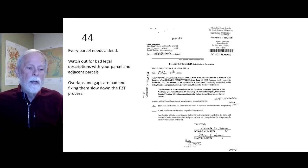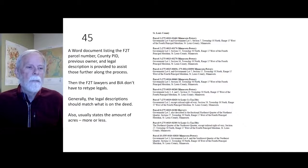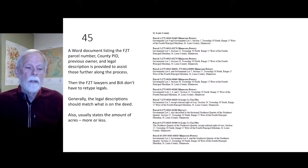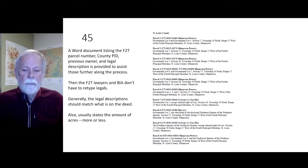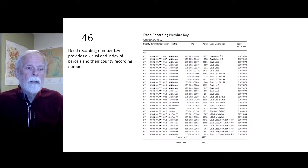It is very important to make sure the legal description is correct. Every parcel needs a deed; watch out for bad legal descriptions on your parcel and adjacent parcels. A Word document listing the fee-to-trust parcel number, the county PID number, previous owner, and legal description is provided to assist those further along in the process — so the fee-to-trust lawyers and BIA don't have to retype the legal descriptions. Generally the legal description should match what's on the deed and usually states the amount of acres, more or less.